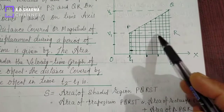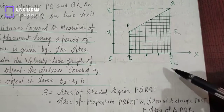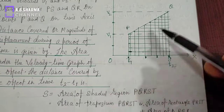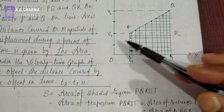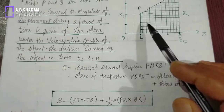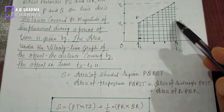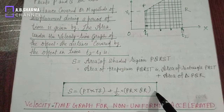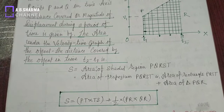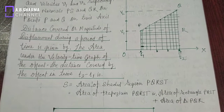To calculate this area: area of rectangle equals length times breadth, that is PT multiplied by TS; plus area of triangle equals half times base times height. Adding these gives the total distance travelled by the moving object. So distance covered, or magnitude of displacement, is found by calculating the area of the shaded region under the velocity time graph.